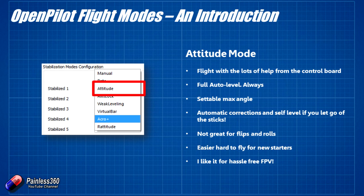The next mode is attitude mode, which gives you the most help from the flight control board and has full auto level always. When you let go of the sticks, the craft will right itself, which is fantastic. I also use this in the wing to save myself and pull it back to level if I'm getting a bit crazy. There is a settable max angle — the maximum angle the craft will bank over, usually 40 to 45 degrees — which means it's not great for flips and rolls. But it's fantastic for FPV, because even if you really push the stick past where you should, the craft will not flip or roll, it will just stay at maximum bank angle. When starting to fly, I absolutely recommend having pitch and roll set to attitude — if you get stuck, just let go of the sticks and the craft will level itself.